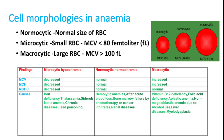Normocytic normochromic anemia means the size and color of cells are normal yet the patient is anemic. Conditions include hemolytic anemia, acute blood loss (which initially shows a normocytic picture but may become microcytic later due to iron deficiency), bone marrow failure from chemotherapy or cancer infiltration, and renal disease.